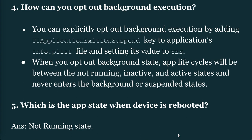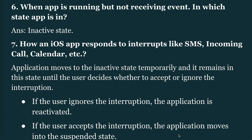Next question: Which app state is the device in when rebooted? The answer is the not running state. Next question: When an app is running but not receiving events, which state is it in? The answer is the inactive state. Next question: How does an iOS app respond to interrupts like SMS, incoming call, or calendar alerts? The application moves to the inactive state. If the user ignores the interruption, the application is deactivated. If the user accepts the interruption, the application moves into the suspended state.